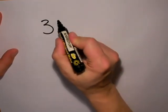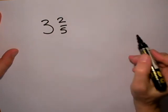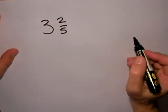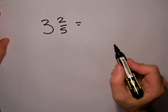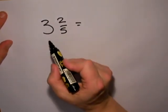The next example I'm going to do is to turn 3 and 2 fifths into a top-heavy fraction. Now we must remember that this time we're dealing with fifths, so every whole 1 is equal to 5 fifths.